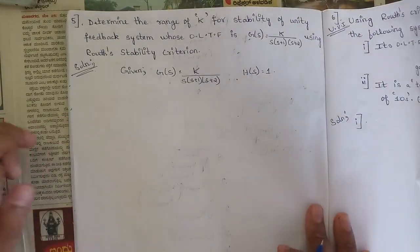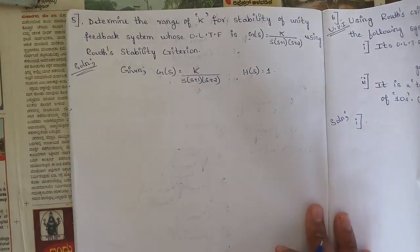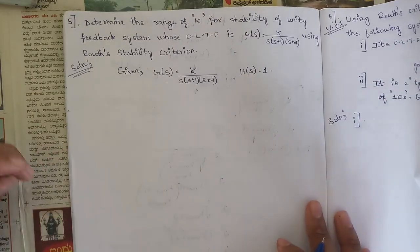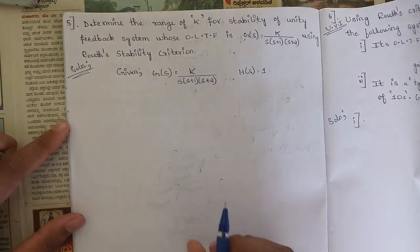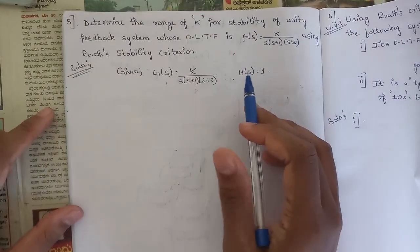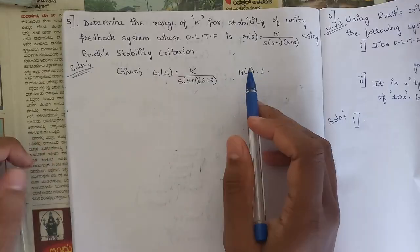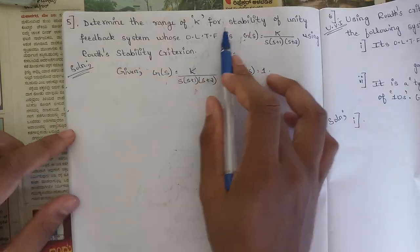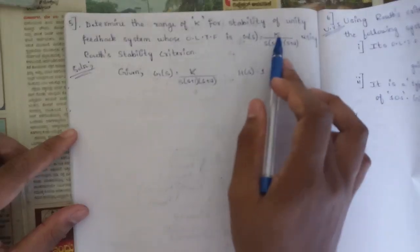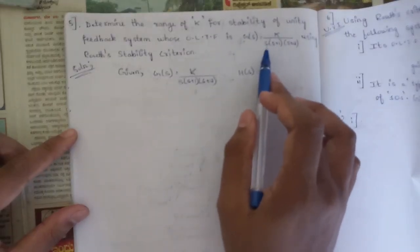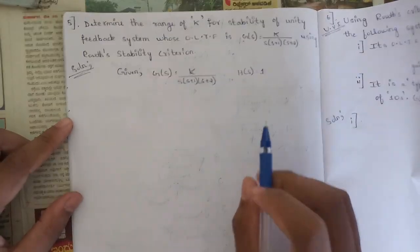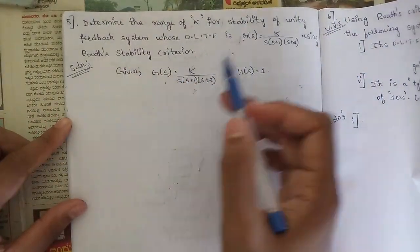Hello everyone, welcome to this new session. We are continuing with the problems we left in the last session. This is the fifth problem — a very simple problem from the model paper. Determine the range of K for stability of a unity feedback system whose open loop transfer function is G(s) = K / [s(s+1)(s+2)], using the Routh stability criterion.